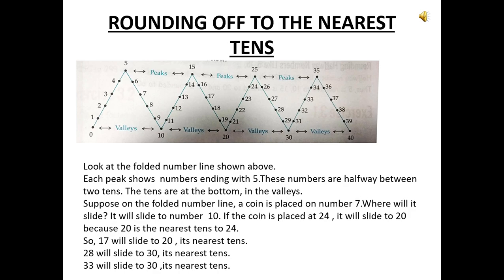Suppose on the folded number line a coin is placed at number 7 - where will it slide? It will naturally slide to number 10. If the coin is placed at 24, it will slide to 20, because 20 is nearest to 24. Thus 17 will slide to 20, its nearest tens. 28 will slide to its nearest 10, that is 30. Similarly, 33 will slide to 30, which is its nearest tens. In this way you can see how to round off to the nearest tens.